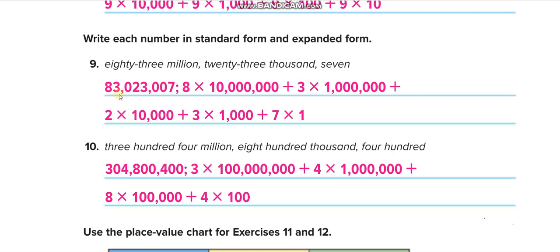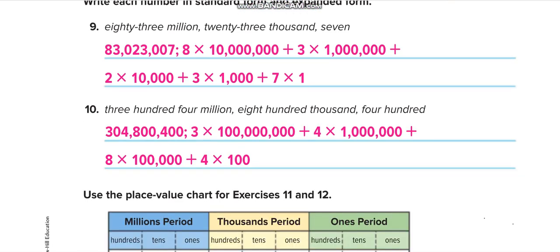The expanded form is: 8 times 10 million, 3 times one million, 2 times ten thousand, 3 times one thousand, and 7 times one. Next question: 304 million, 800,000 in the thousands period, and 400 in the ones period. That gives the standard form, and this is the expanded form.